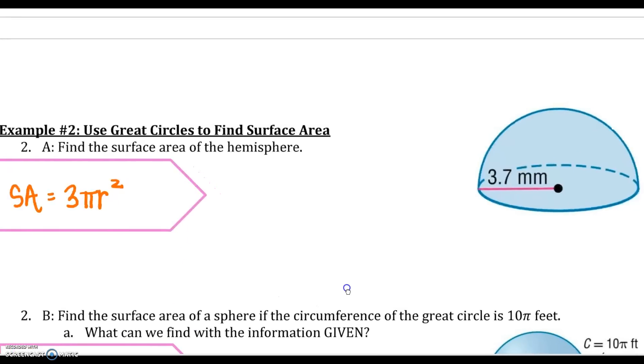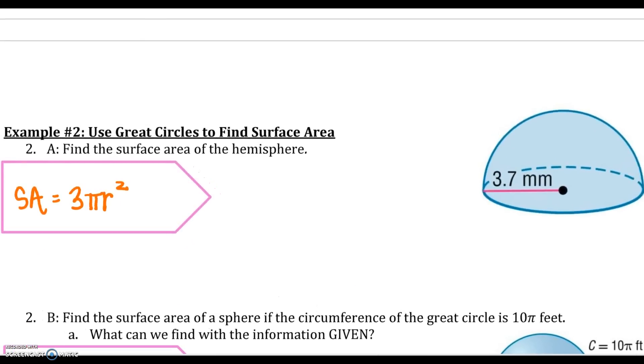All right, the great circle and find the surface area. So notice this is a hemisphere, so we're going to use the 3πr². So I'm going to say 3π, my radius is 3.7. I'm only going to square the 3.7, so I'm going to get 129.0 millimeters squared.